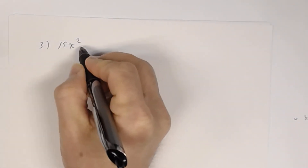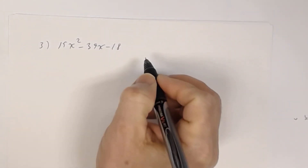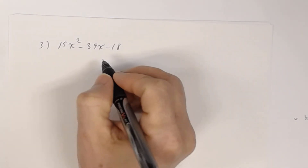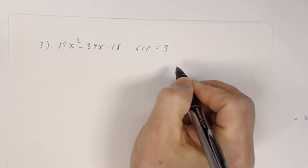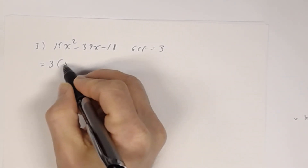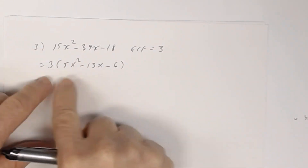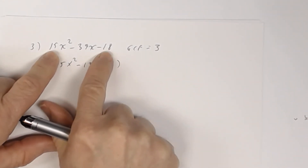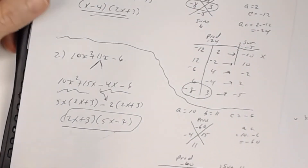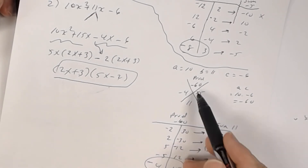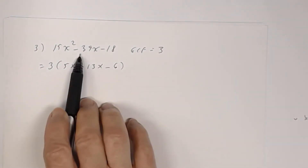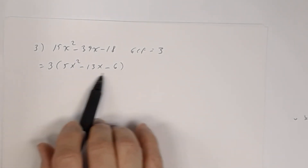Number 3: 15x squared minus 39x minus 18. Make things easier by finding the GCF first. The GCF here is 3, so factor that out to get 3 times (5x squared minus 13x minus 6). This is important — if you used a=15 and c=negative 18, you'd get a product of negative 270 and you'd need factors with sum negative 39. That's much harder to work with.